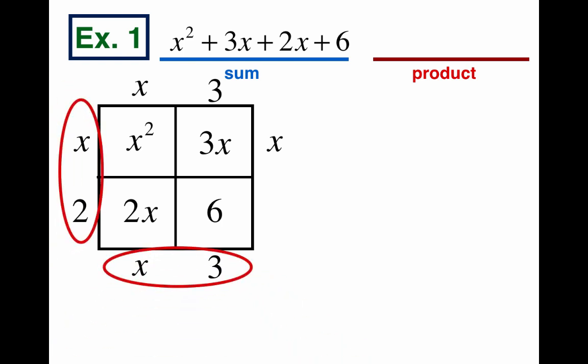So look at our answer. Our product is what's on the left and bottom. x plus 2 and x plus 3. So I'm going to make two big parentheses and write x plus 2 and x plus 3 and there it is. There's our product and our answer. Now this one was pretty easy because the sum was given to us in a really nice way. Now let's try one that's a little more challenging.